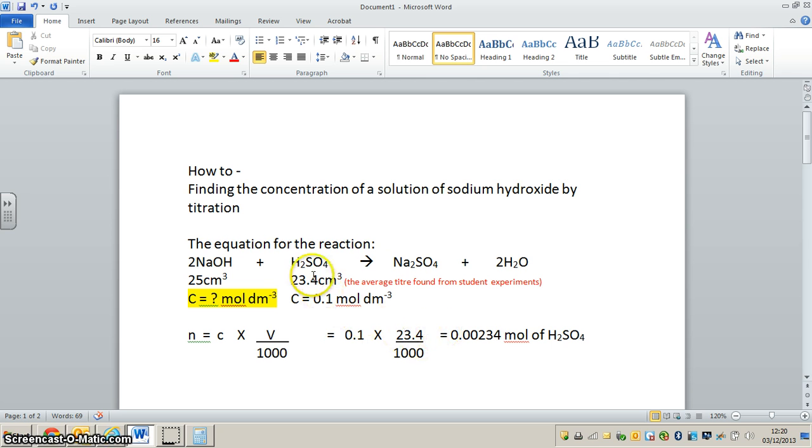Now we need to look at the actual stoichiometry of the equation. We have this number of moles of sulfuric acid. But if we look over here, this number of moles reacts with twice the number of moles of sodium hydroxide. So what we need to do to work out the number of moles of sodium hydroxide is to multiply this number by two.